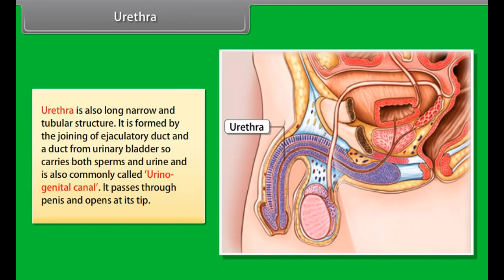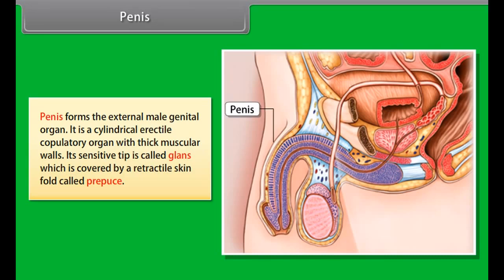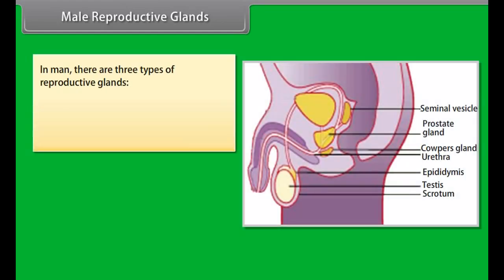The sperms are carried by a long tube called vas deferens or sperm duct into organs called seminal vesicles where the sperms get nourished and stored. The urethra is also a long, narrow, tubular structure. It is formed by the joining of the ejaculatory duct and duct from the urinary bladder, so it carries both sperms and urine, and is also commonly called the urinogenital canal. It passes through the penis and opens at its tip.